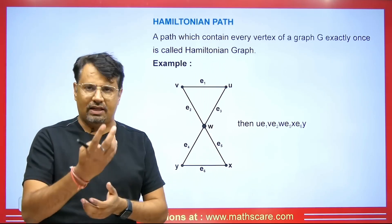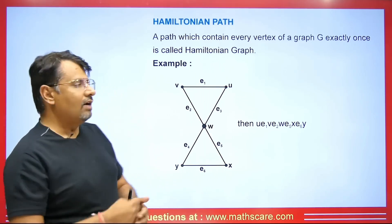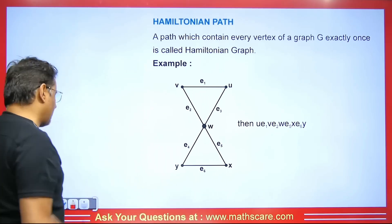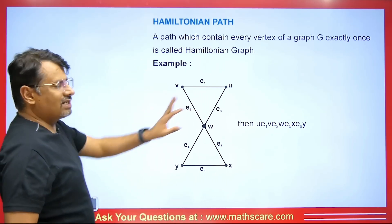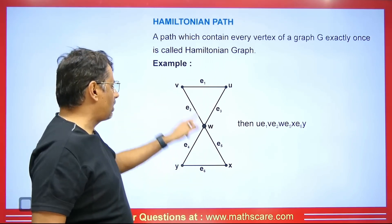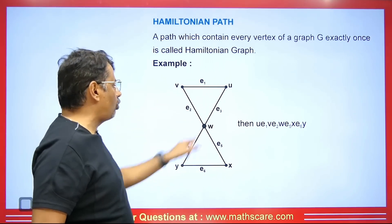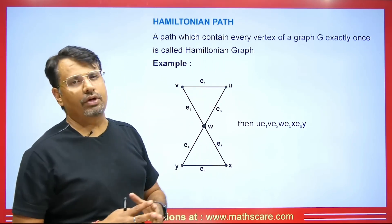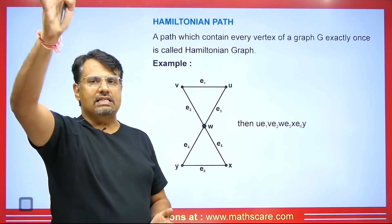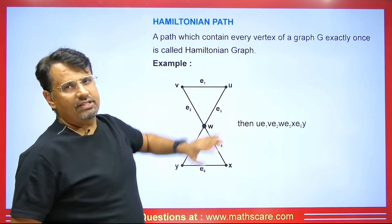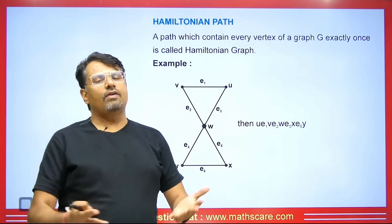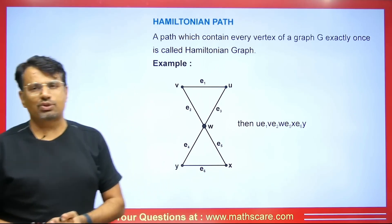Hamiltonian graph is a different concept. The vertex should not repeat. In the path we should have all vertices covered — that is the Hamiltonian path. If we try to close this path, vertex W here would repeat, which is a concept for the circuit. But for the path, all vertices covered without repetition in the middle is what gives us the Hamiltonian path.